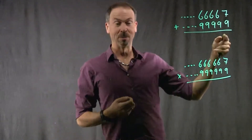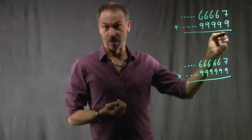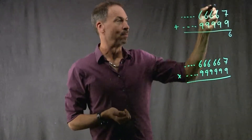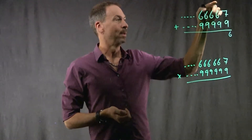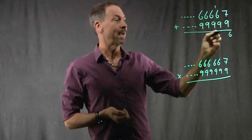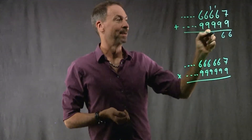Addition problem: 7 plus 9 is 16. I'd write 16, but 10 explodes — kaboom! — extra dot there. 16 again, 10 explodes, 1 dot there. 16, 10 explodes, 1 dot there.